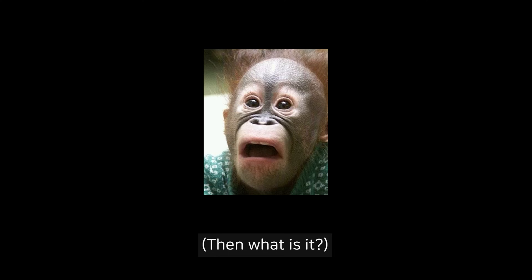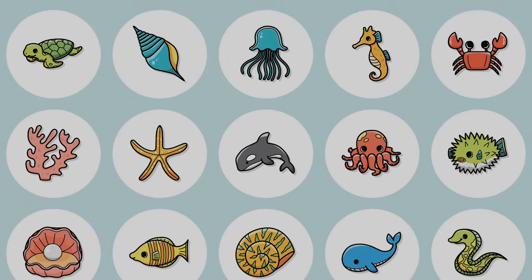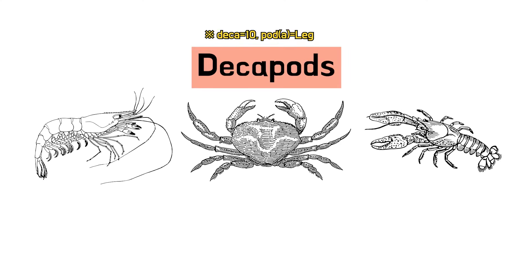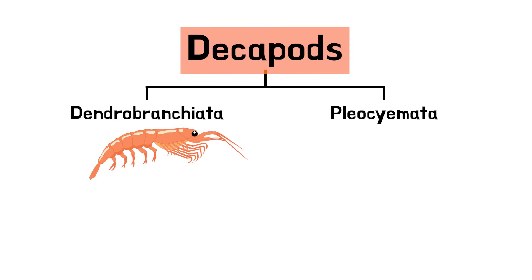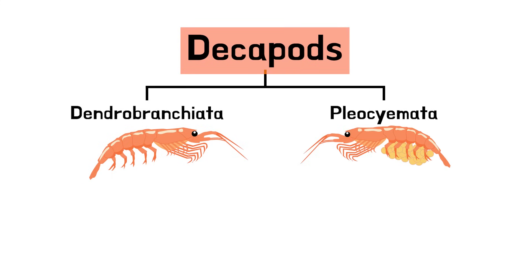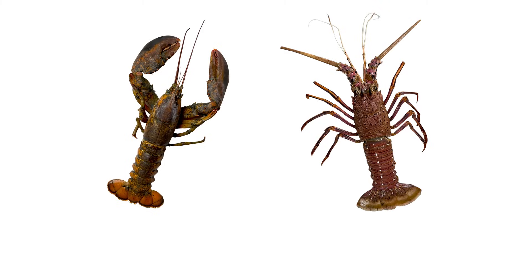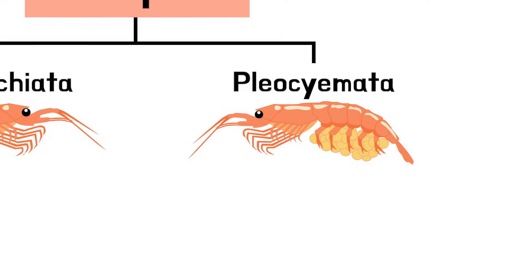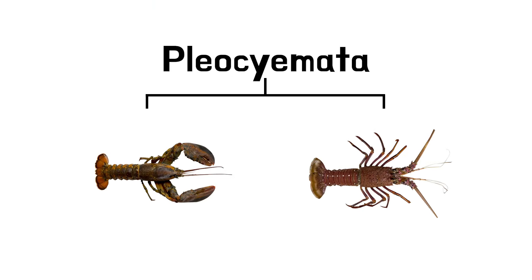But actually, it's not exactly a lobster either. To understand its biological classification, most of our beloved crustaceans belong to the Decapoda order, characterized by having ten legs. Decapods are split into two suborders: Dendrobranchiata, which release their eggs into the sea, and Pleocyemata, which carry their eggs on their abdomen. Lobsters and spiny lobsters both belong to the Pleocyemata. However, within the Pleocyemata, lobsters and spiny lobsters are categorized under different superfamilies, Astacidea and Achelata, respectively.